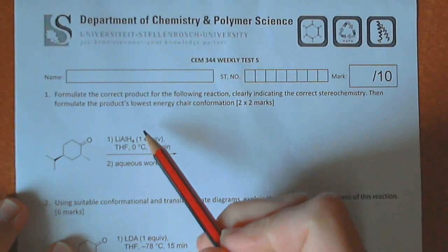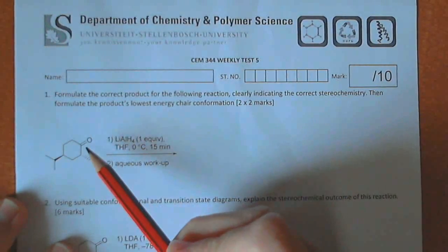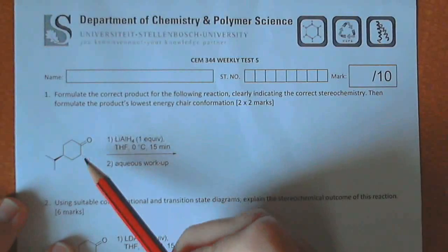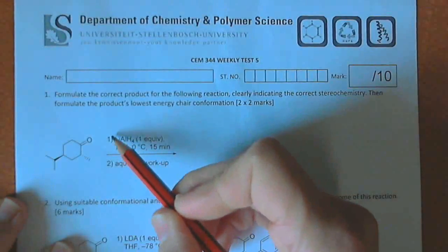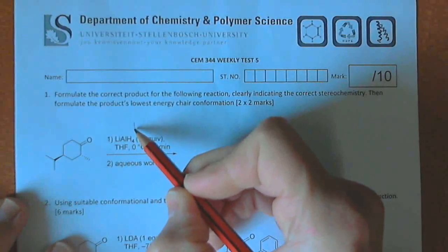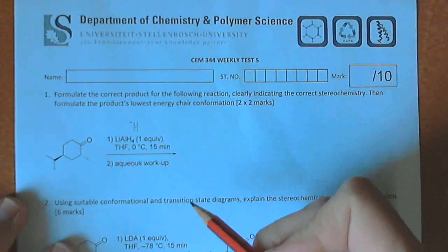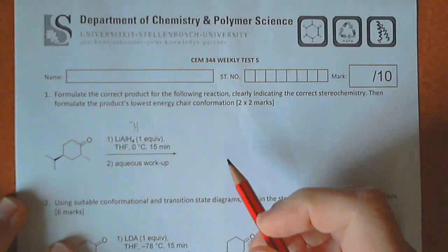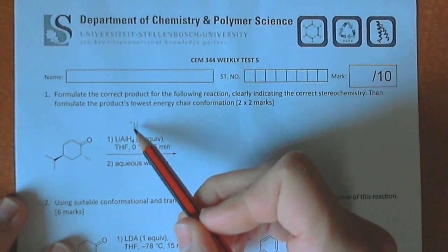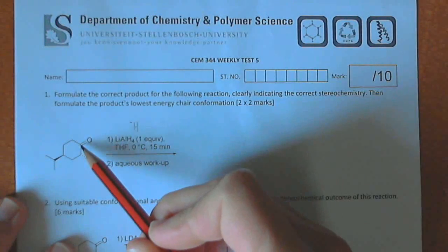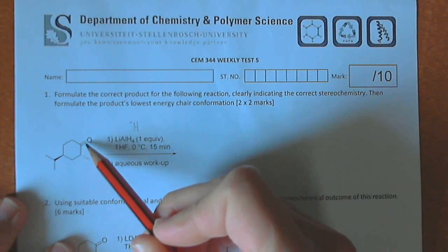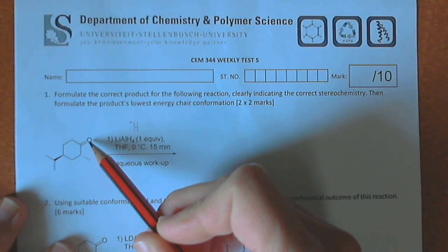Lithium aluminium hydride is a reducing agent and it will reduce a ketone to an alcohol. Lithium aluminium hydride as a reducing agent releases effectively an H- which is a very small nucleophile. And so the nucleophile, because it is small,